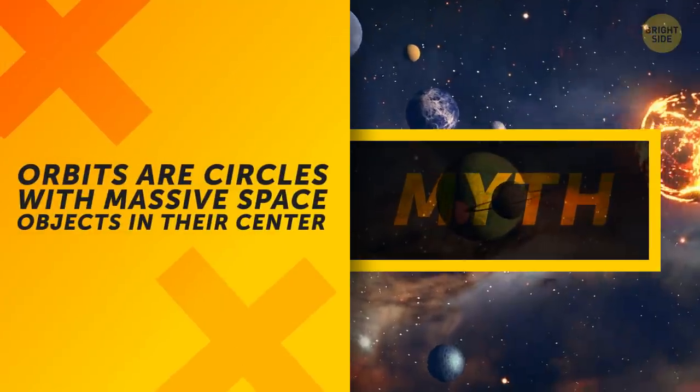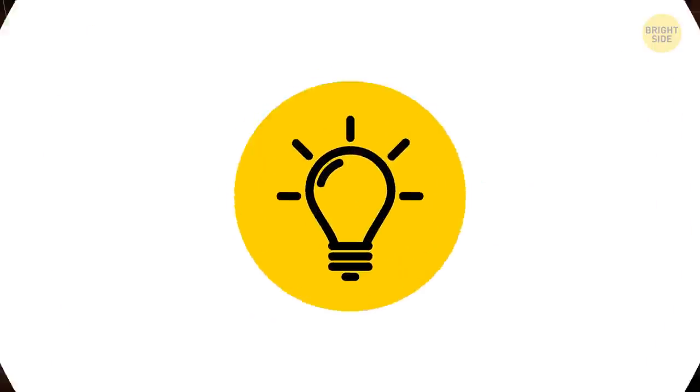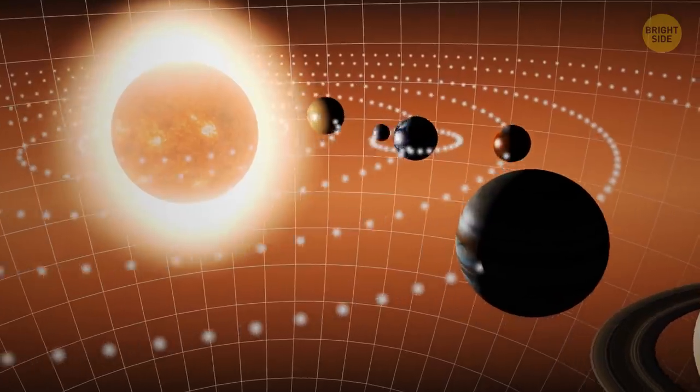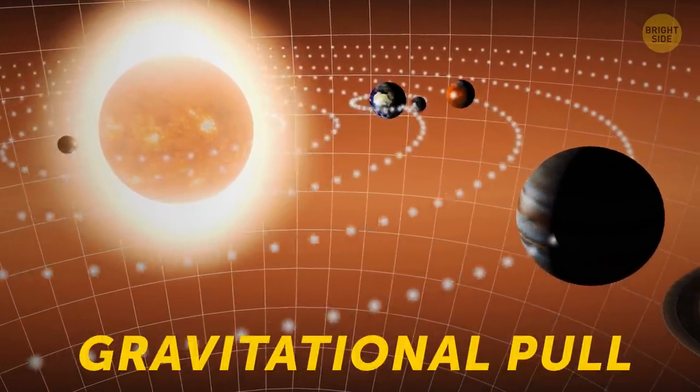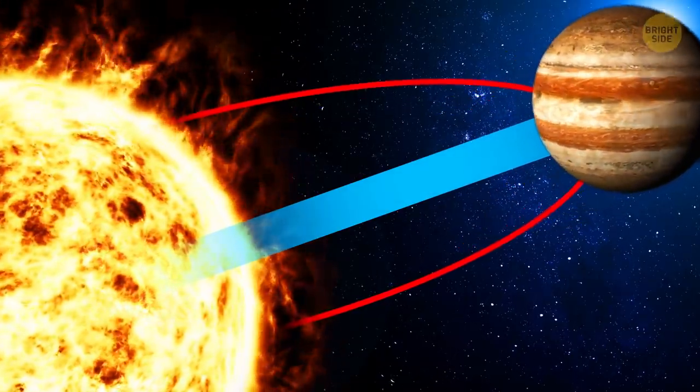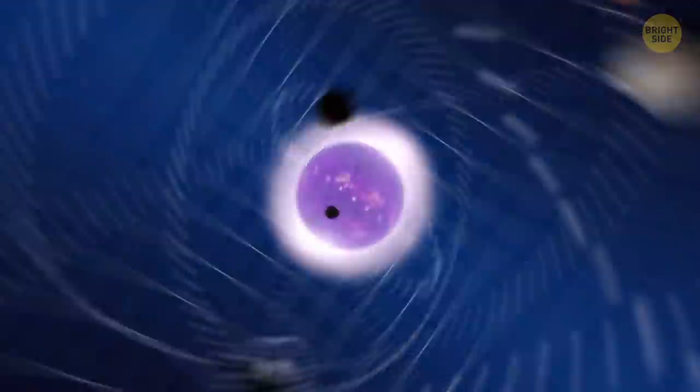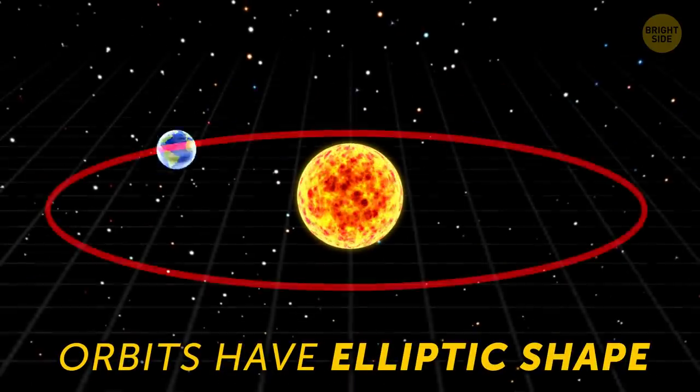Orbits are circles with massive space objects in their center. While the Sun holds planets in their orbits due to its gravitational pull, planets have their own pull that shifts the center of orbit away from the Sun. It looks more like they dance with each other. Plus, orbits have elliptical shapes, not circles.